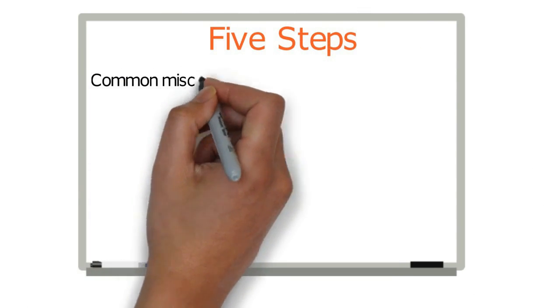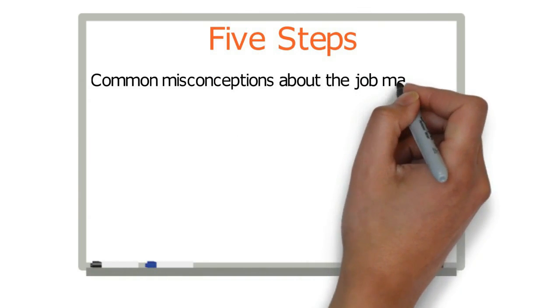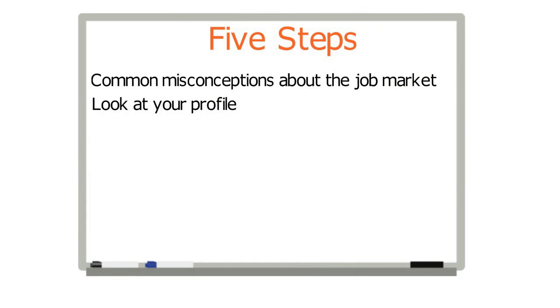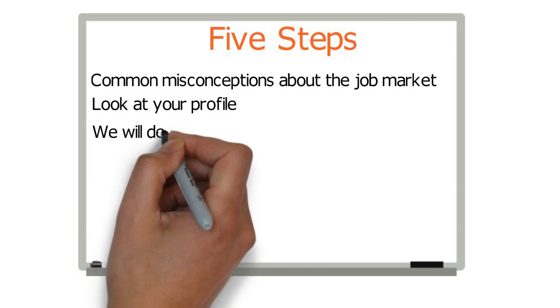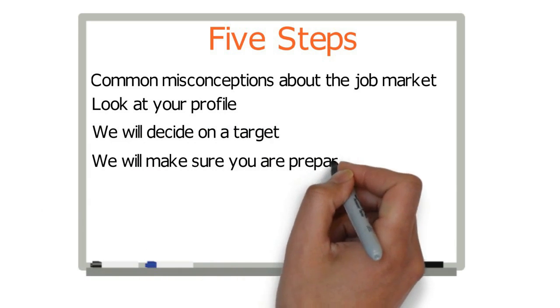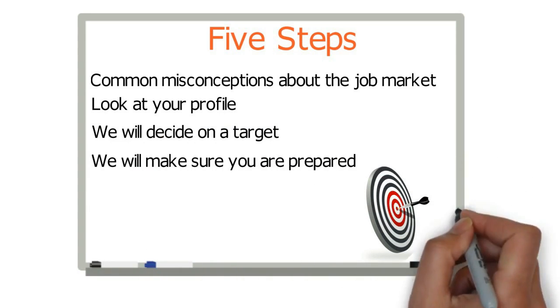First, we will look at some of the common misconceptions there are about the job market. Second, we will look at your profile. Who is Sam? Third, we will decide on a target. Fourth, we will make sure you are prepared. And finally, we will fire on the target. Of course, knowing we are unlikely to hit the bullseye on the first go. Sam had a few reservations.